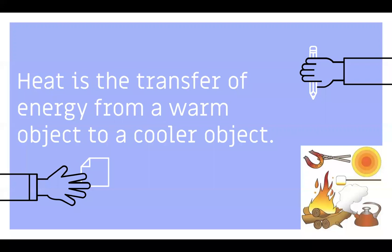The last topic for today: heat. Heat is a transfer of energy from a warm object to a cooler object. We can see different forms of heat: the sun, a fire, a horseshoe, melting metal, shaping gold or copper, roasting a marshmallow — all transfers of heat.